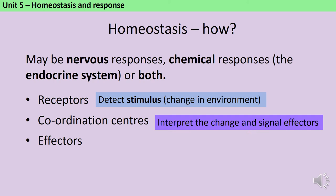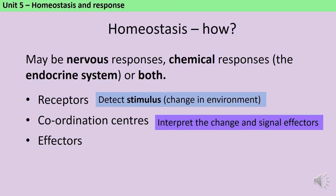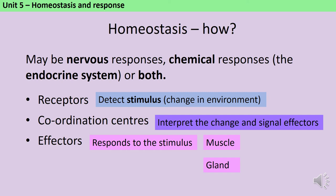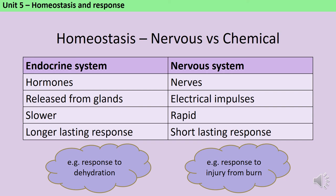The second part of a control system is a coordination center. Its role is to interpret the change in the environment — the stimulus — and then signal the effectors to do something. The main coordination centers in the body are the brain and the spinal cord, but also some other organs such as the pancreas. Finally, the control system needs to have effectors, because these are the cells that actually respond to the change and help conditions return to what they were before. Effectors can be split into muscles, which contract to move a body part, and glands, which release hormones or other chemicals.